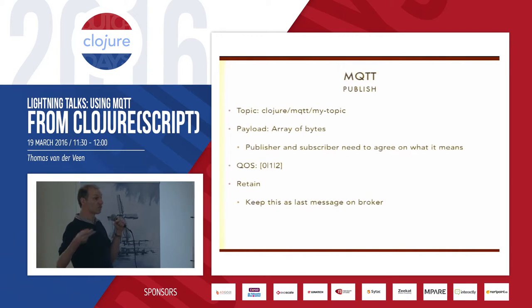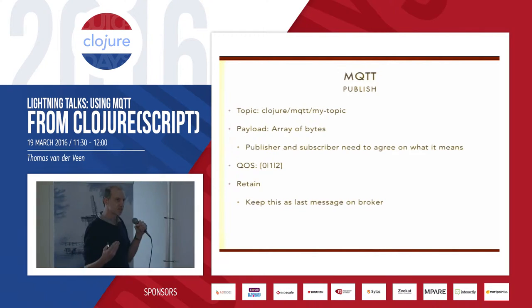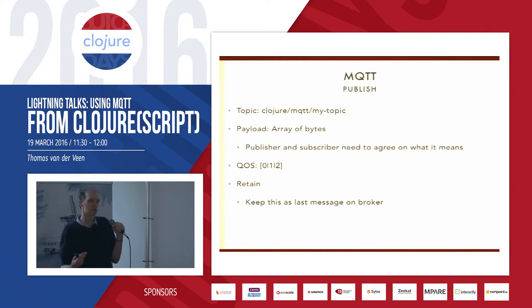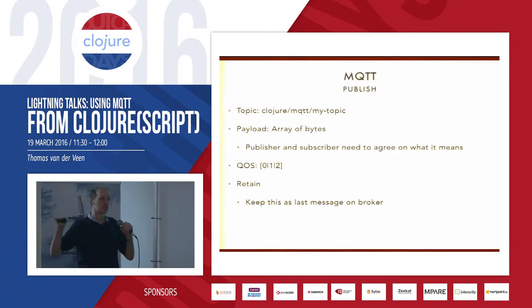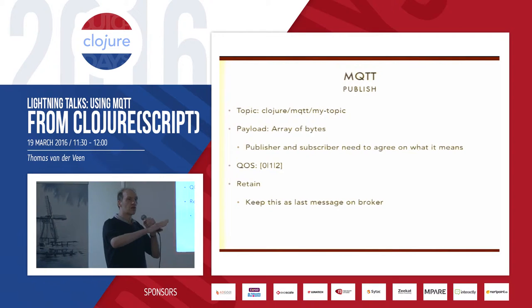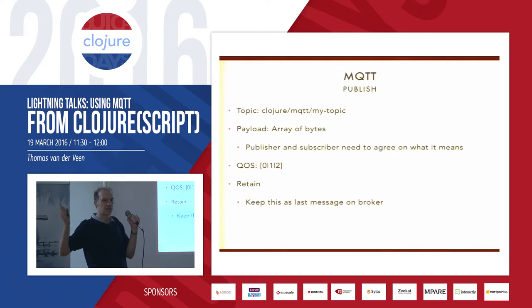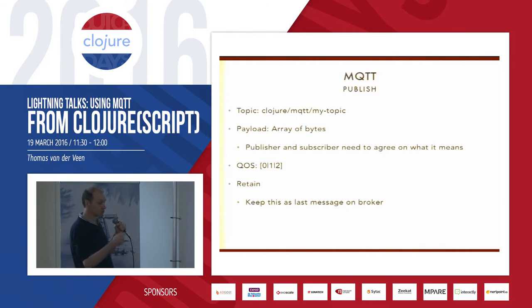The publisher and subscribers still need to agree on what the payload is and what it all means. You set the quality of service: 0, 1, or 2. The retain flag is very handy — it comes in when messages don't update frequently and you want the last published message. For instance, temperature: I'm publishing the temperature of this room. If a subscriber comes on an hour later, it just wants the latest value, and that's retained by the broker and published to the subscriber.